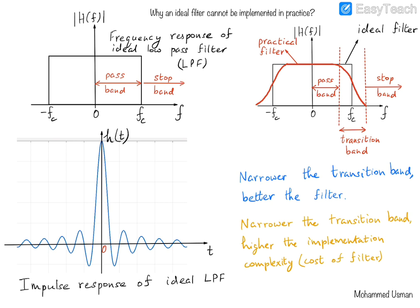In practice, however, the frequency response of a filter does not have a vertical cutoff like this. Instead, it has a gradual transition band moving from the pass band towards the stop band. The state of the filter does not change from pass band to stop band at a specific frequency, but rather it tapers gradually from the pass band to the stop band. That is the distinction between the frequency response of an ideal filter and that of practical filters.